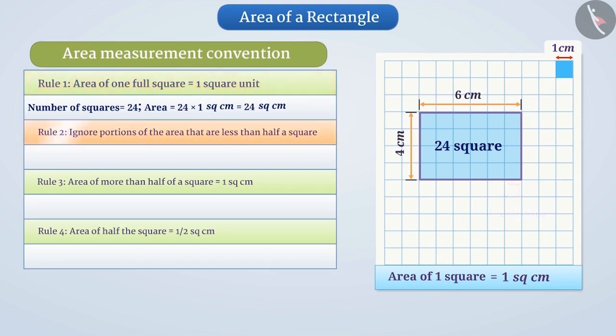Rule 2: Ignore portions of the area that are less than half a square. We don't have such squares here. Rule 3: If more than half of a square is in a region, count it as 1 square cm². We don't have such squares either.